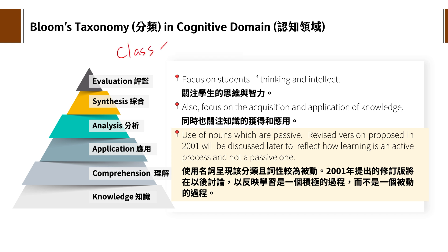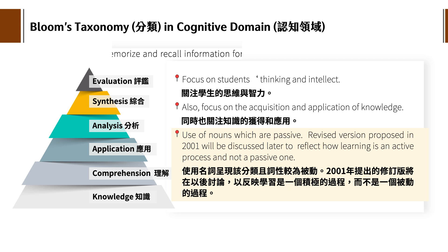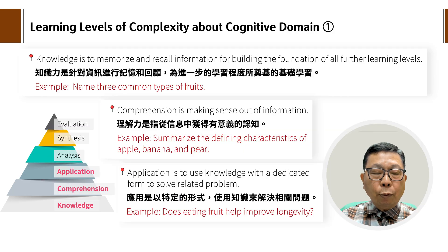要注意这些名词在文献上被讨论说是比较被动的，所以后面在第三节第四节，会讲到2001年以后提出来的新版本，用动词的方式来呈现。比如说class是一个名词，像仓库里的东西，没有人去用它就是死的；名词就是没有动词去激化它，它就是死的、很被动的东西。所以要先把它活化，先弄懂整个基本结构。